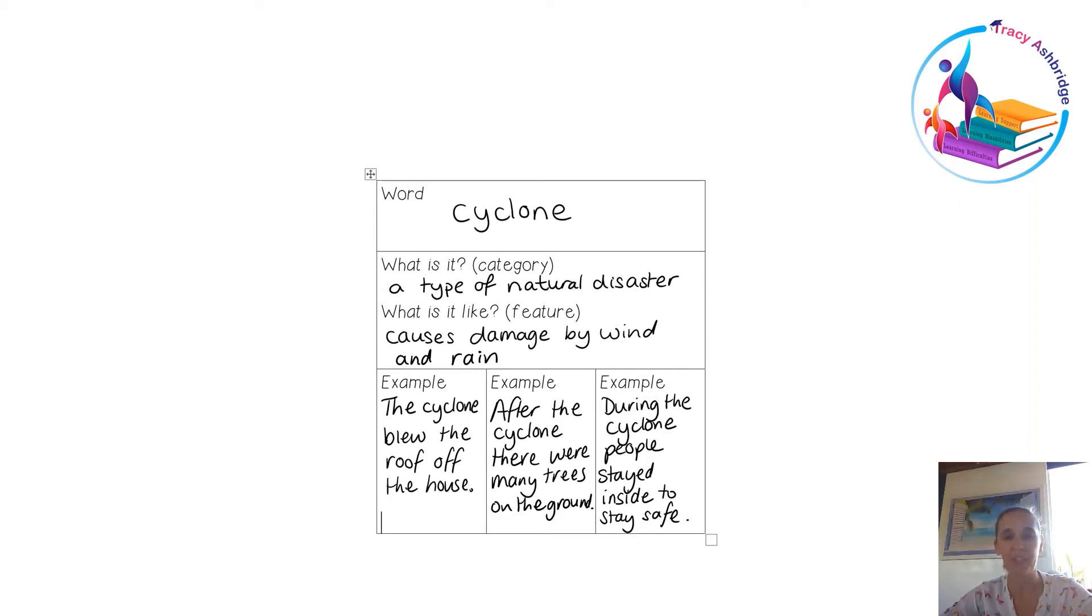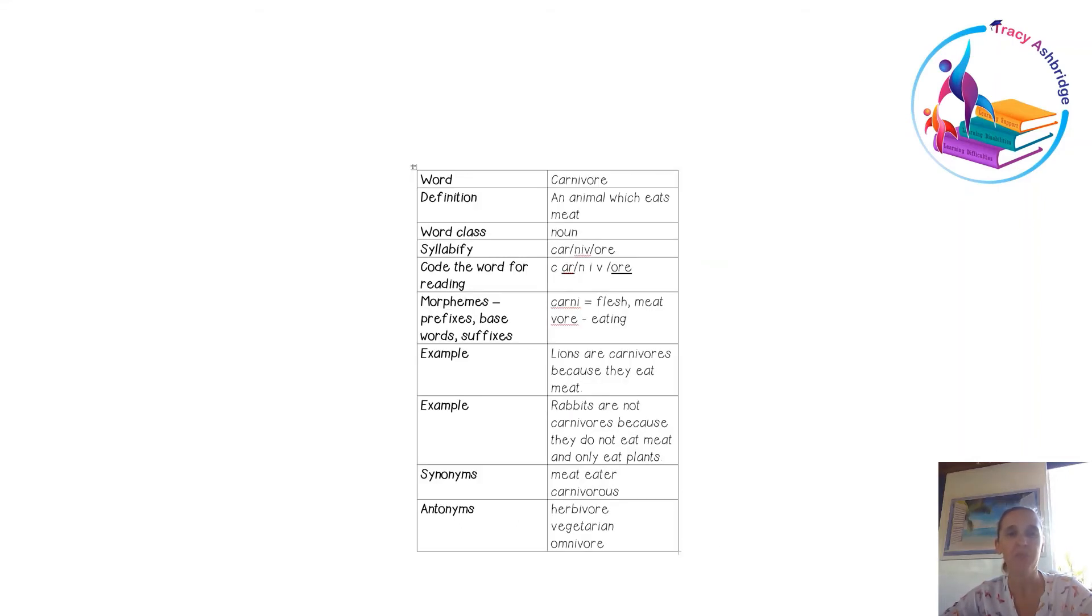This one I really like for students who have multiple difficulties—students who have literacy difficulties across the board, so they may have dyslexia as well as be learning new words. This means you can tie in some of the skills they need to support their literacy learning with their vocabulary. Here's the word carnivore, and we've got a definition of that. We also think about what word class it belongs to. Might not sound so important, but just to keep dropping those in helps to build that as we go.